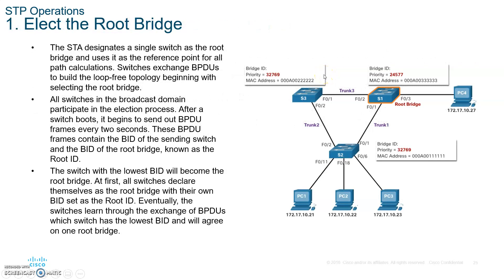Step number one: when you boot up the switches, they are going to elect a root bridge. The switches create their bridge ID numbers and share them with each other. The switch with the lowest bridge ID number wins the election. If you leave the bridge ID priority as the default, then the switch with the lowest MAC address wins. To make a specific switch win the election, make its priority number lower than the default.